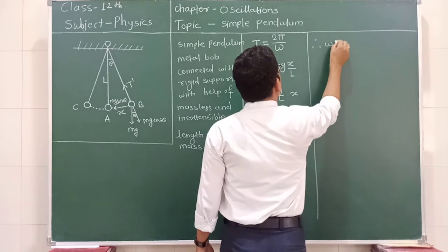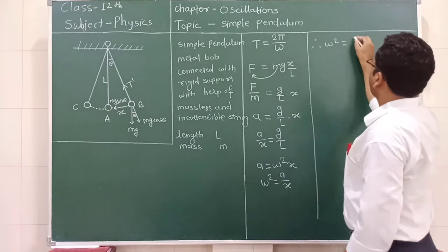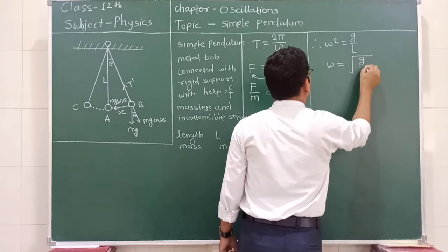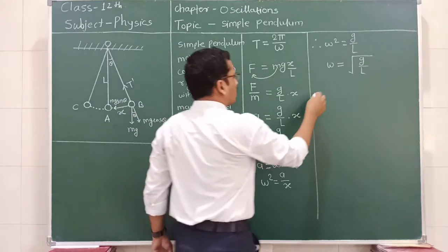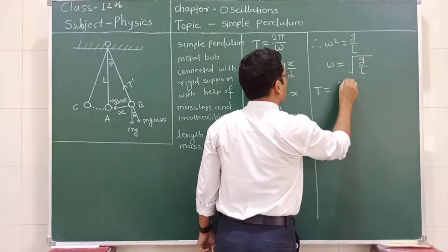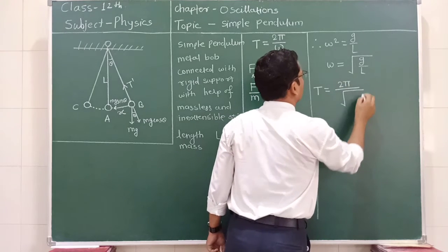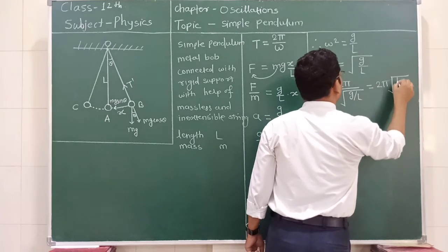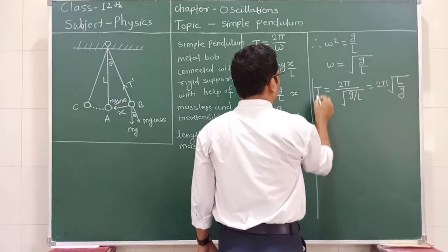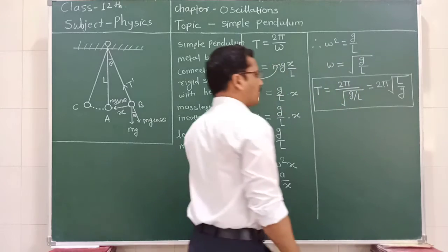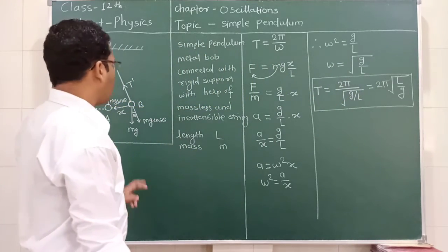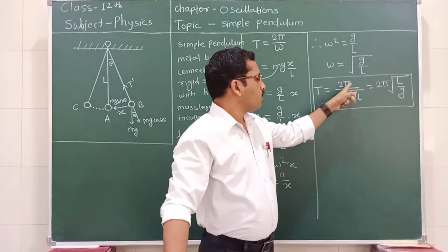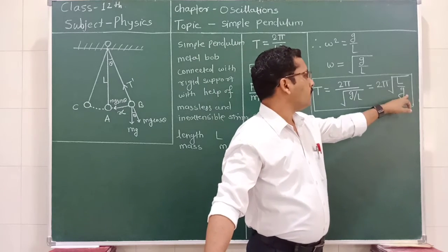Since ω² = g/L, we have ω = √(g/L). Substituting into T = 2π/ω, the time period is T = 2π / √(g/L) = 2π√(L/g). This is the equation for the time period of a simple pendulum of length L under gravitational acceleration g.